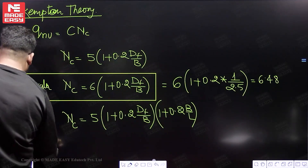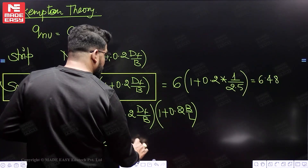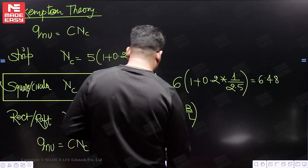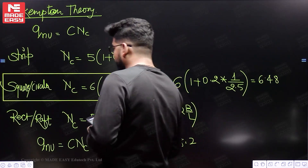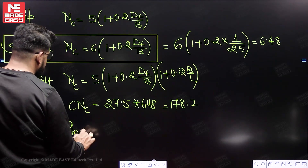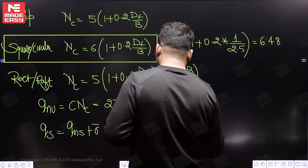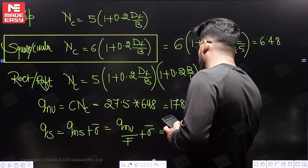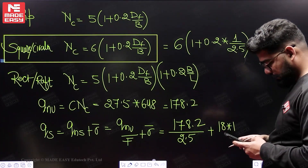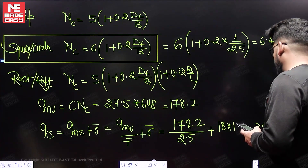So the net ultimate bearing capacity: q_nu = C·NC = 27.5 × 6.48 = 178.2 kN/m². The question asks for safe bearing capacity: q_safe = q_nu / FOS + σ̄ = 178.2 / 2.5 + γ·Df = 71.28 + 18×1 = 89.28 kN/m².